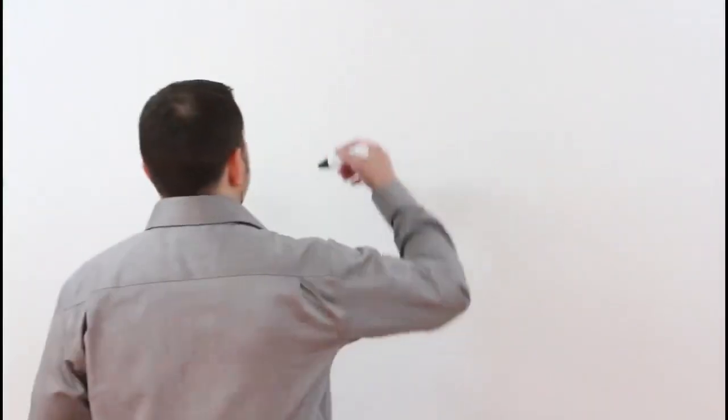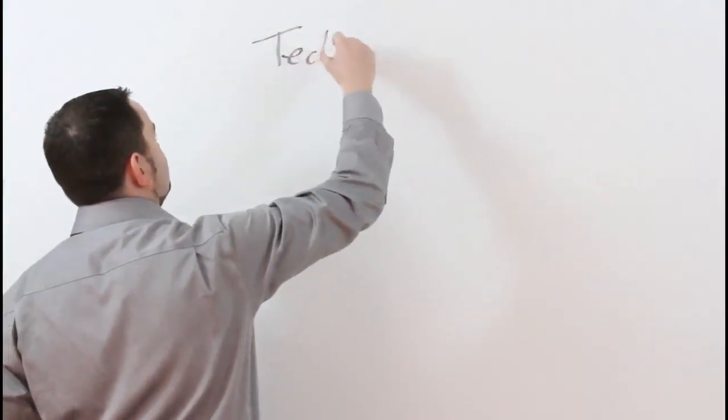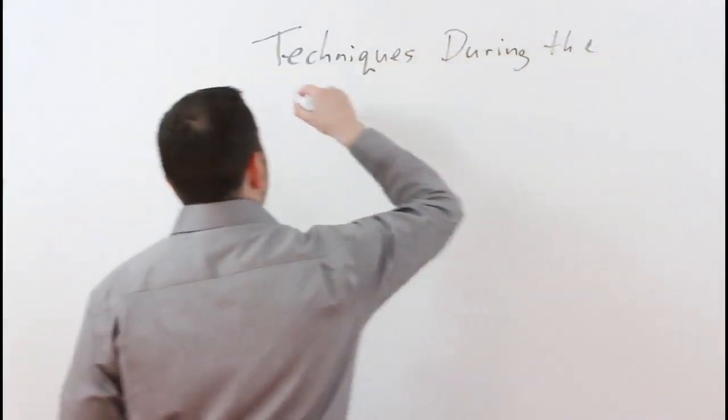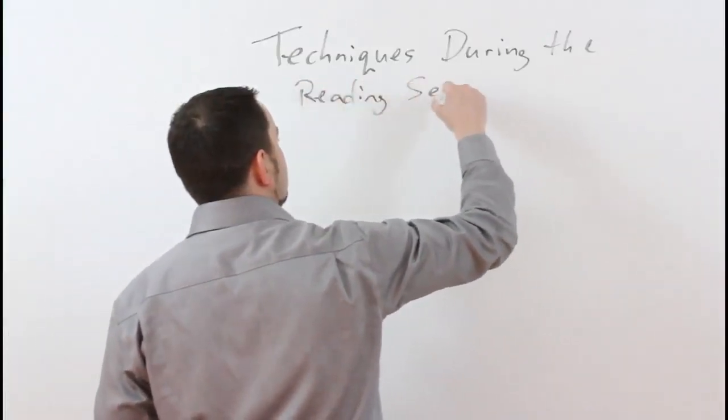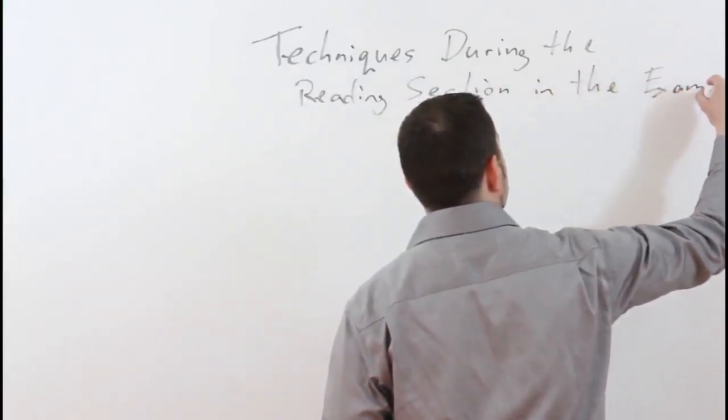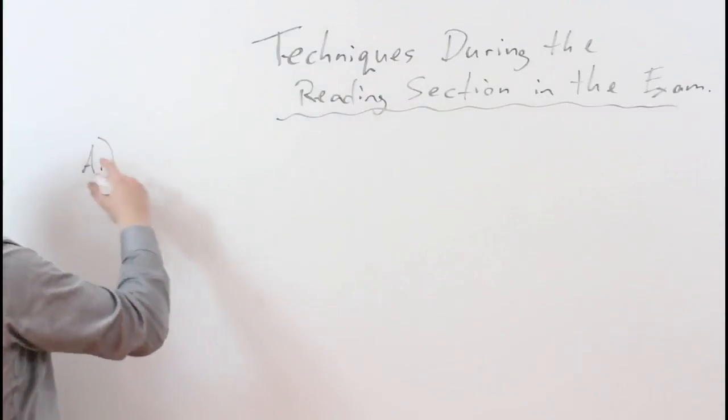The first question that we're going to answer is the list of headings. Now, list of headings is the only question that you should answer as you read, okay? Every other question you should answer after you have finished reading. So, this is techniques during the reading section in the exam. Okay, and the first technique here is list of headings.